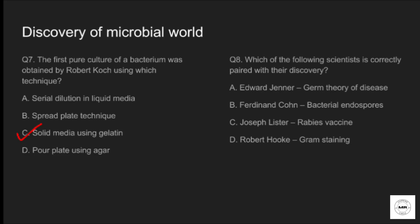Question number eight: which of the following scientists is correctly paired with their discovery? Option A: Edward Jenner — germ theory of disease. Option B: Ferdinand Cohn — bacterial endospore. Option C: Joseph Lister — rabies vaccine. Option D: Robert Hooke — gram staining. The correctly paired answer is option B, Ferdinand Cohn — bacterial endospore. Edward Jenner developed the vaccination process, Joseph Lister developed antiseptic technique, and Robert Hooke coined the term 'cell'.